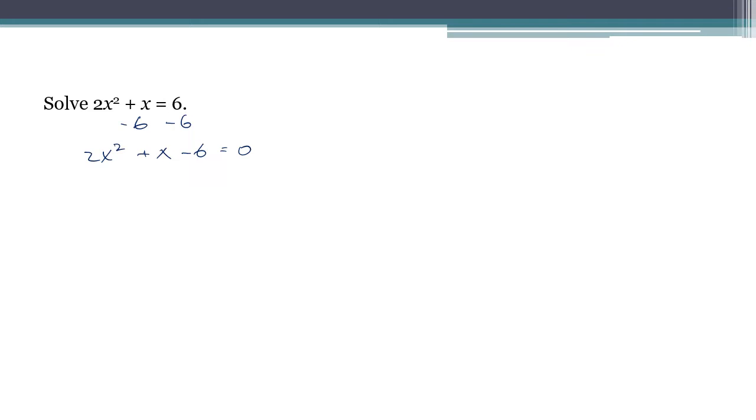And I'm pretty sure this is going to factor. This is going to be 2x minus 3 times x plus 2 equals zero. That's the zero product rule situation.